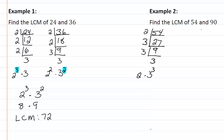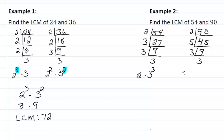Now for ninety: ninety is divisible by two, leaving forty-five; forty-five is divisible by five, leaving nine; nine is divisible by three, leaving three. So the prime factorization of ninety is two times three squared times five.